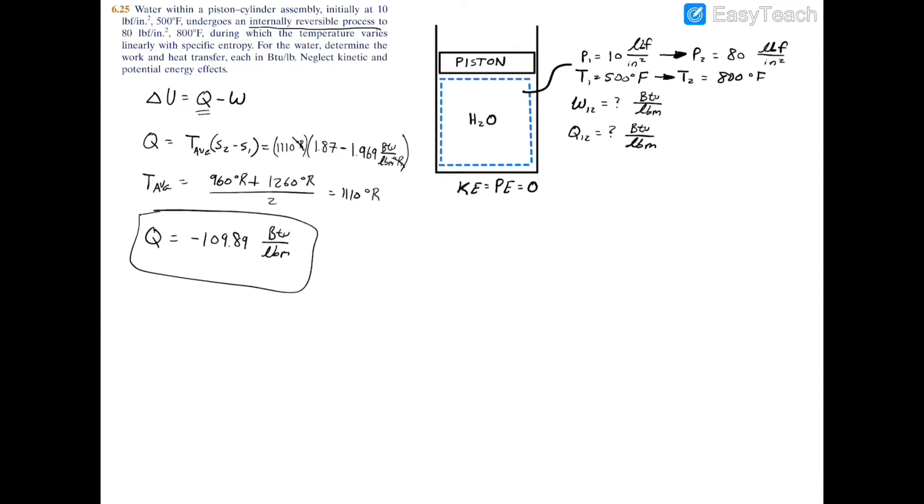To find the work, I'd like to use this expression again. Now that we have our heat transfer, we just need to find the internal energy, which we can break down using the specific internal energy. We're going to have u2 minus u1 equals negative 109.89 BTU per pound mass minus the work, where this here is just your heat transfer.